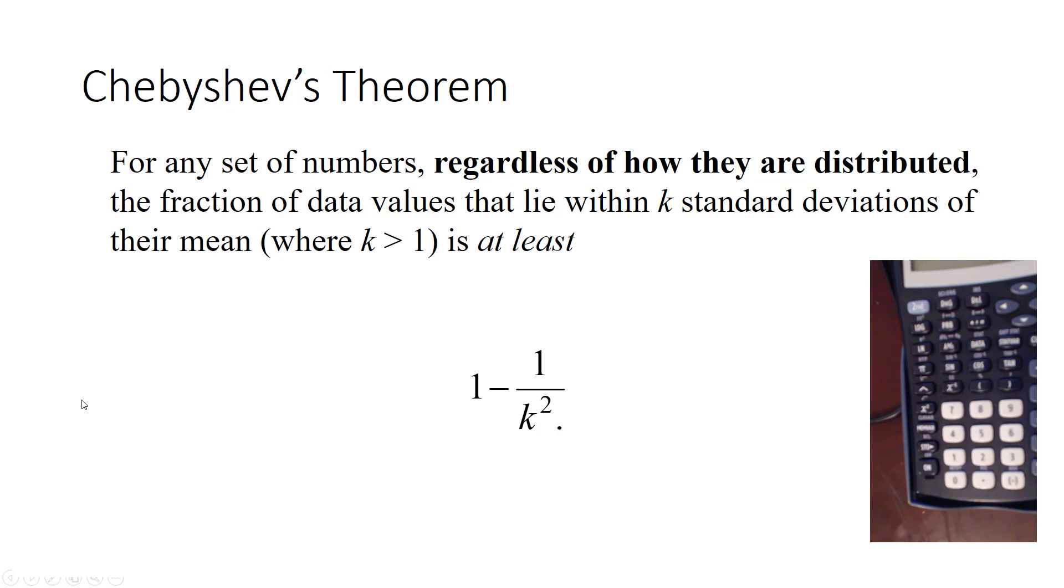It doesn't require a particular distribution. It says that the fraction of data values that lie within k standard deviations of their mean is at least 1 minus 1 over k squared, as long as k is something bigger than 1. So k could be 2, 3, 4. k could also be 1.1 or 1.01, anything bigger than 1.